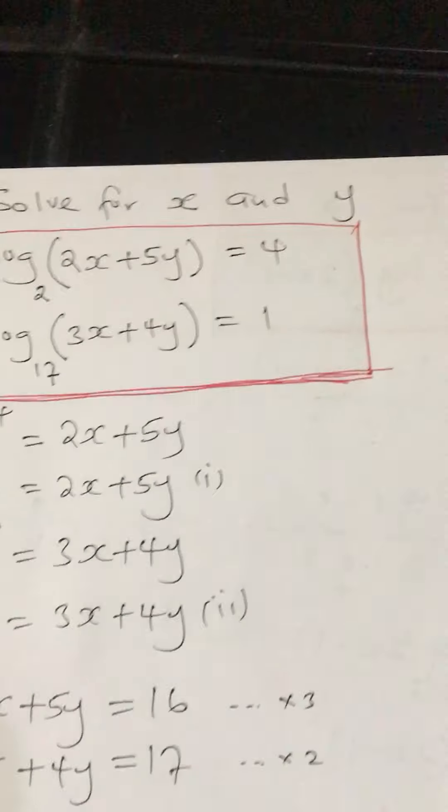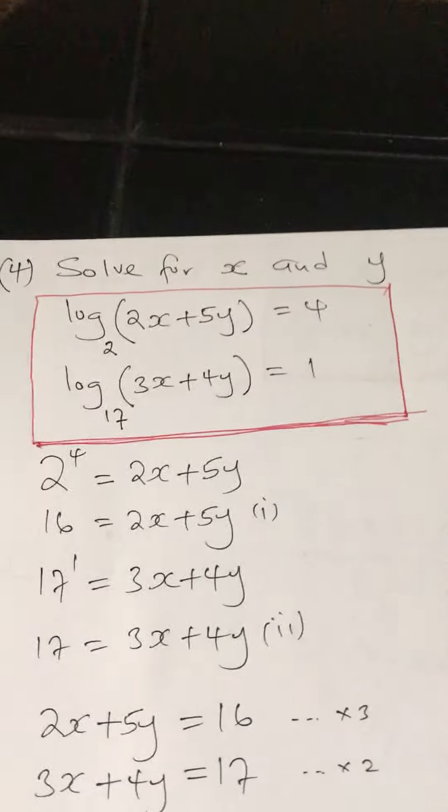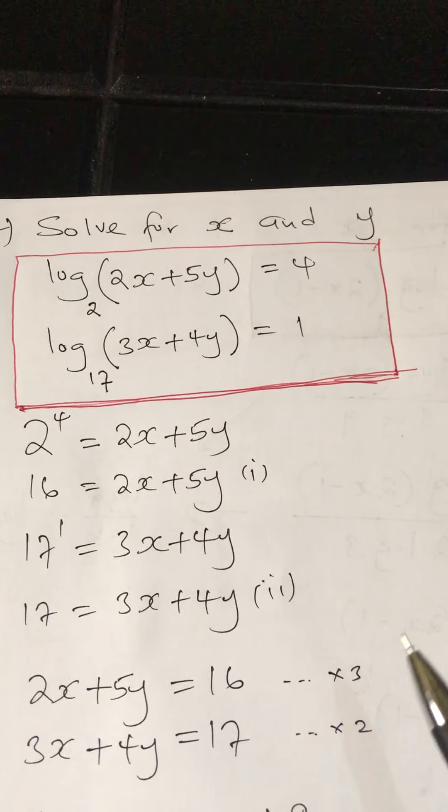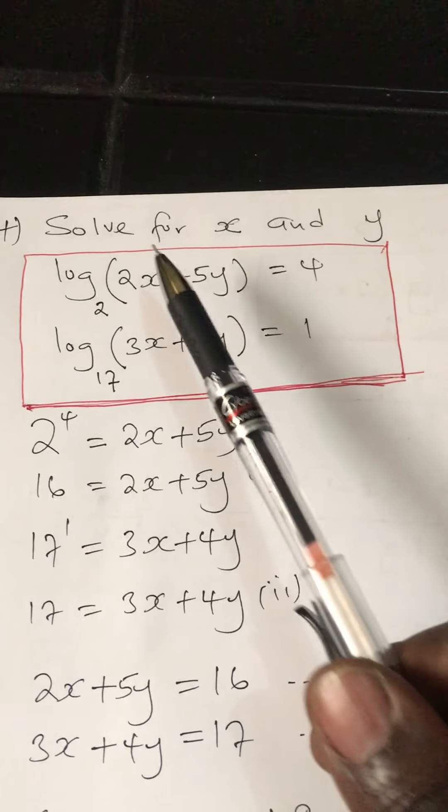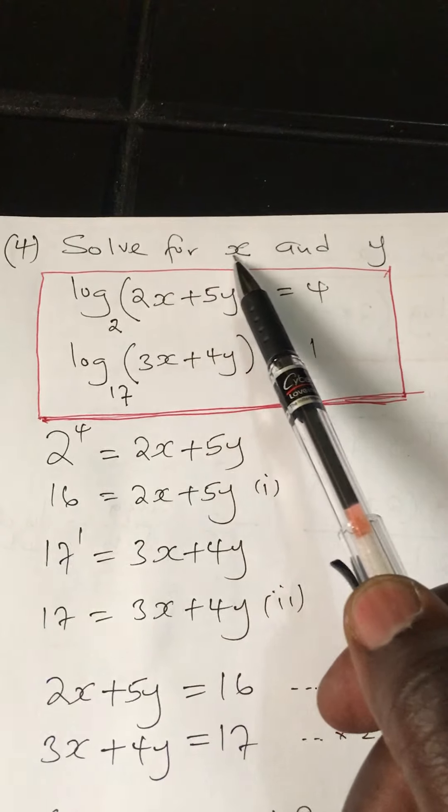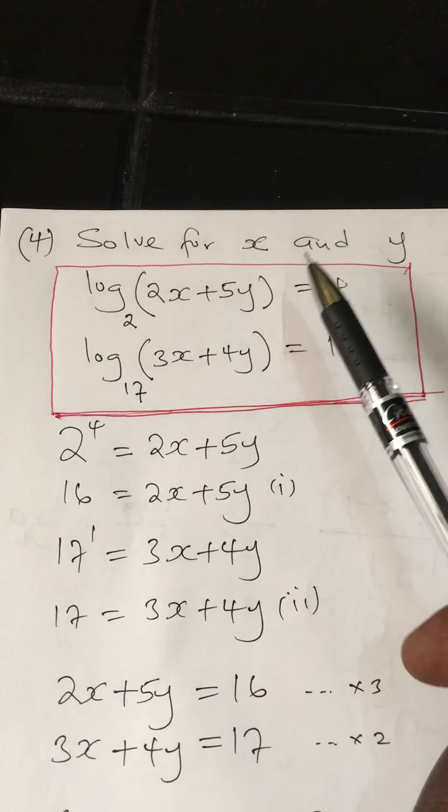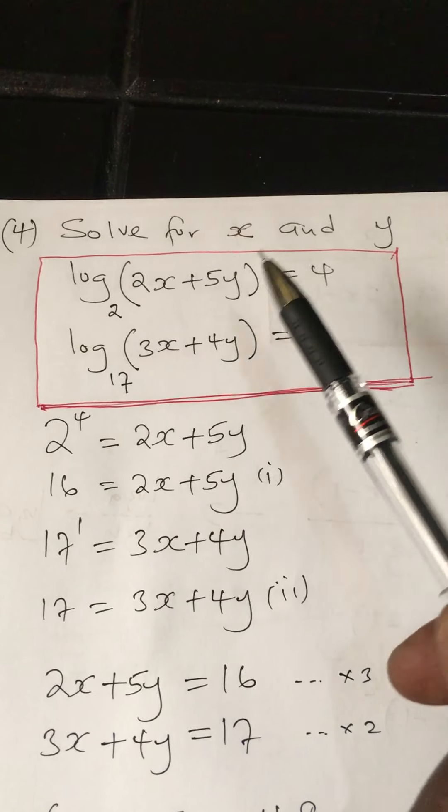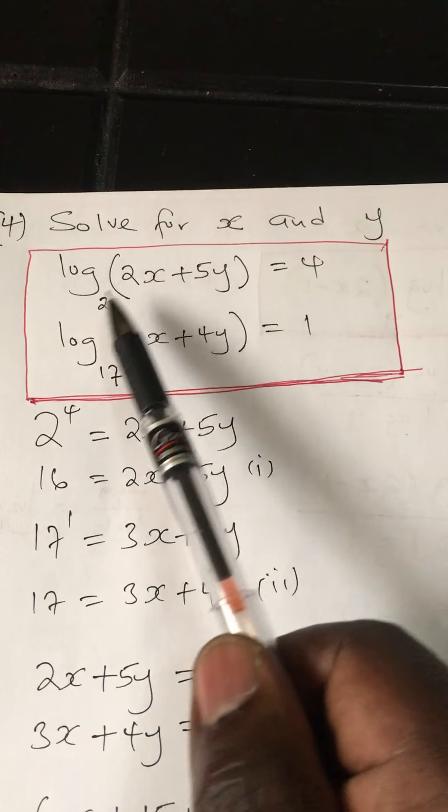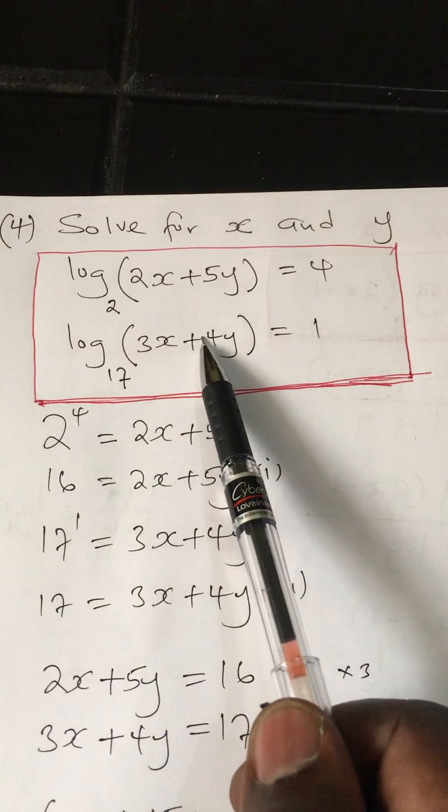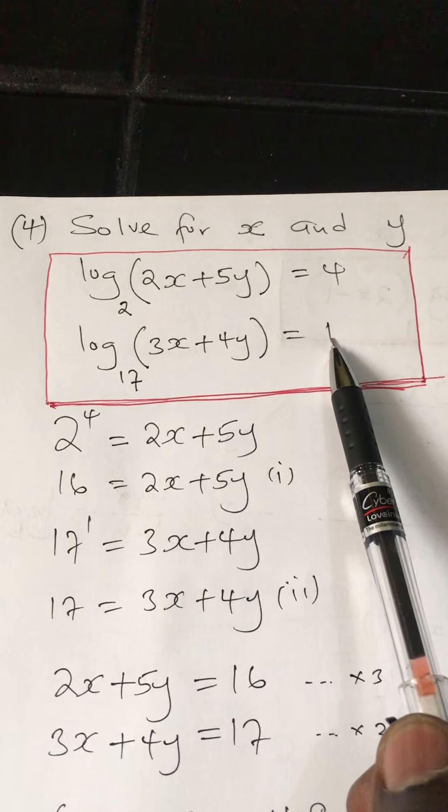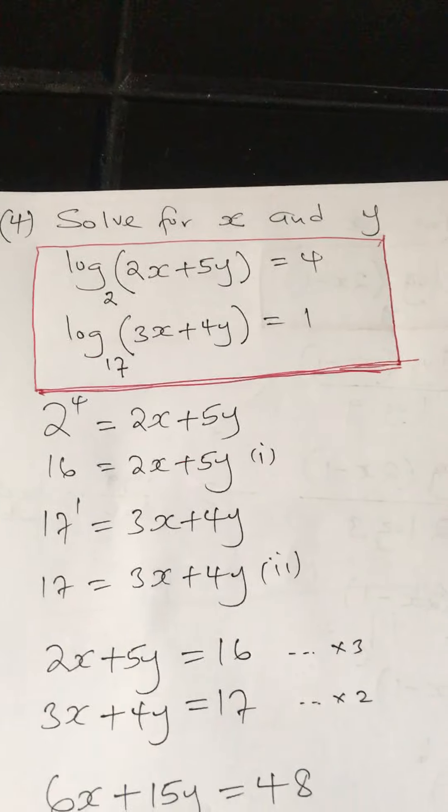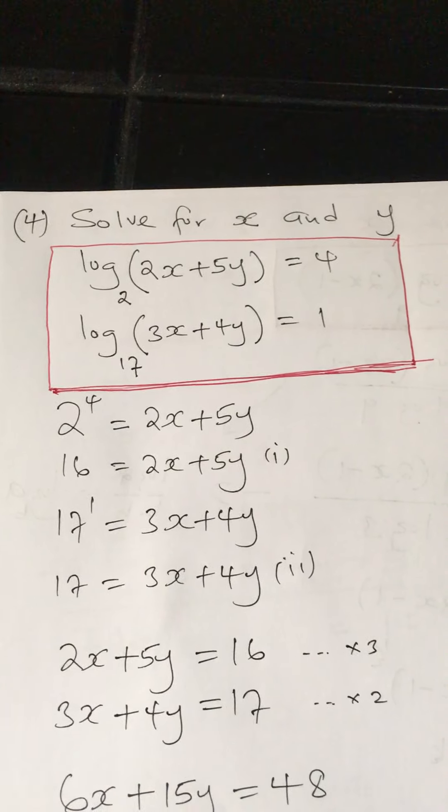The second example I'll explain is a question to do with logs that are simultaneous in a way. Straight to the point, they say solve for x and y. There are two unknowns, so anytime you have an equation with two unknowns, it ends up being simultaneous. There are two logs here: log base 2 of something equals 4, and log base 17 of something equals 1.